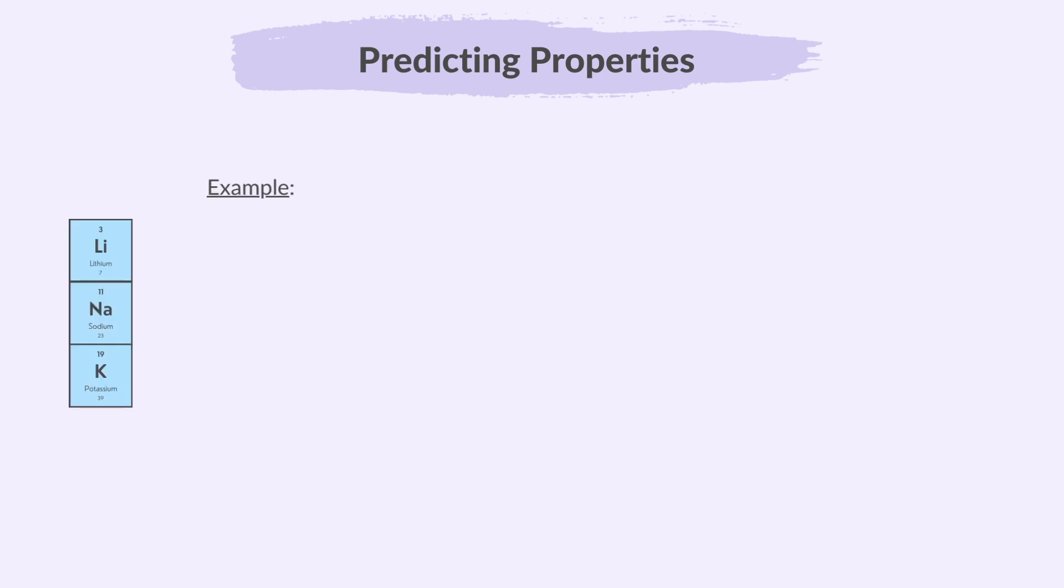Let's consider the elements in group 1 as an example. Lithium is at the top of group 1, sodium is below lithium and potassium is below sodium. So, if we consider the reactivity trend down the group, reactivity increases as you go down the group.